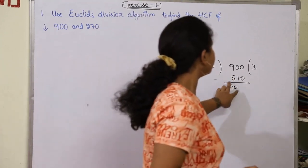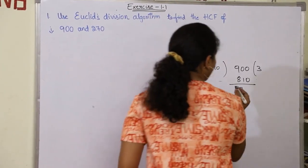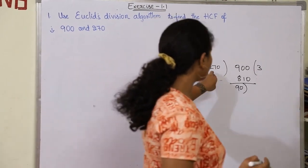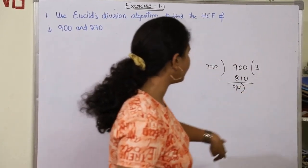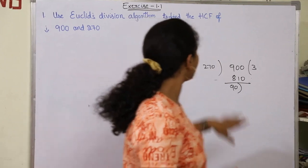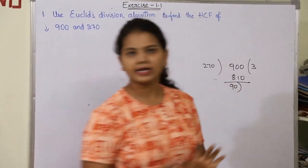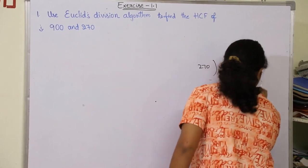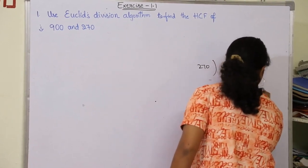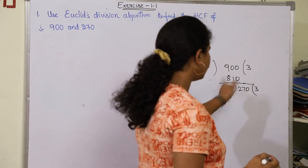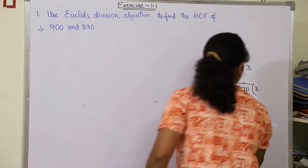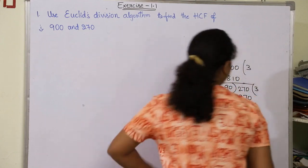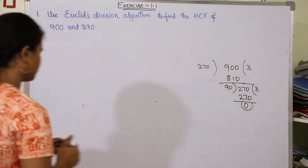Now I got remainder as 90. Now just divide 270 by 90. So now here we got the remainder 90. By dividing this, this becomes 3, and 90 times 3 is 270. So therefore I got 270 and the remainder I got is 0. So just stop the process over there.